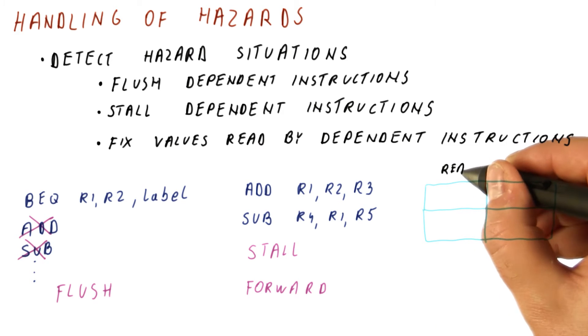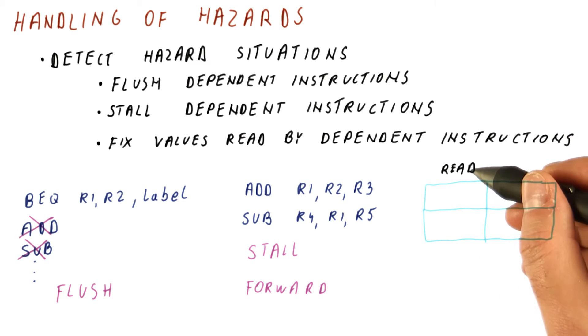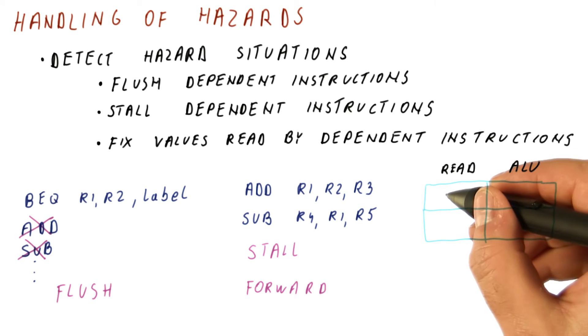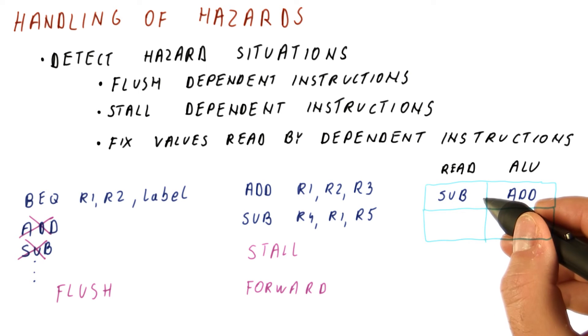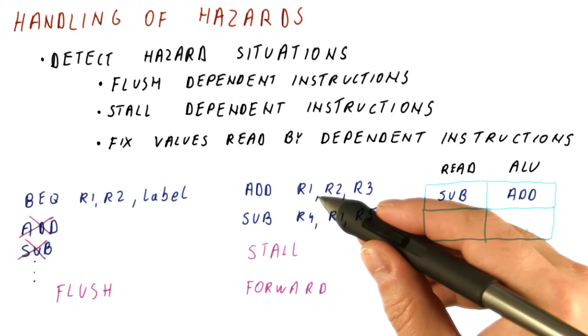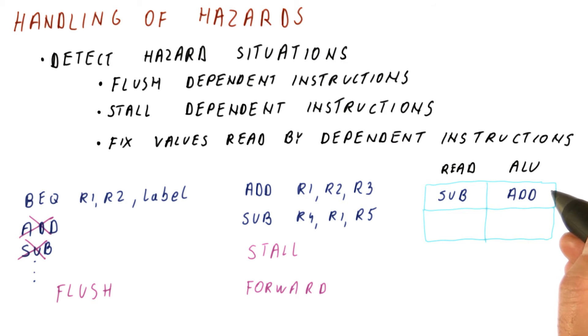Let's consider our five stage pipeline and just worry about the stage where we read the registers and the ALU stage. In a cycle where the subtract is reading the registers, the add is in the ALU stage. At the end of this cycle, the subtract has read the wrong register value for R1 because R1 still doesn't have what add will eventually write to it. But the add at the end of this cycle has the value, it's just that it didn't put it in R1 yet.